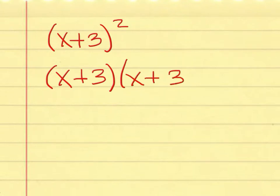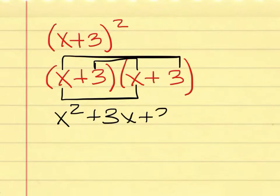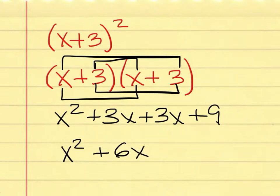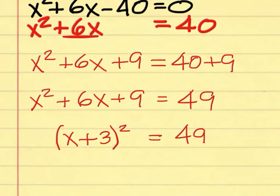If we multiply these two together, we get x squared plus 3x plus 3x, then plus 9. If you add the middle terms together, it is 6x. So x squared plus 6x plus 9 — that's exactly what we had on this side. That is a perfect square, written in square form.